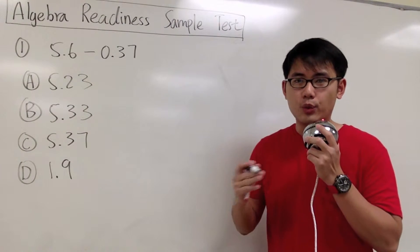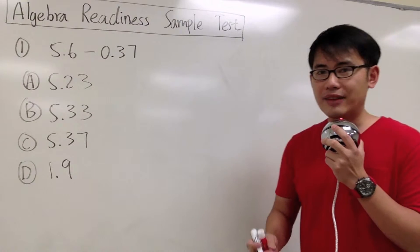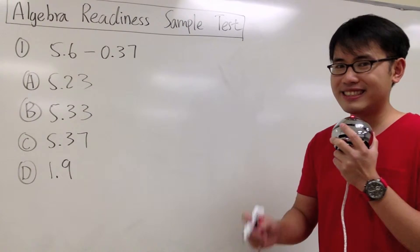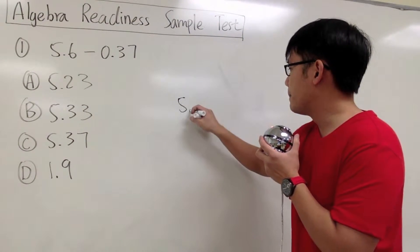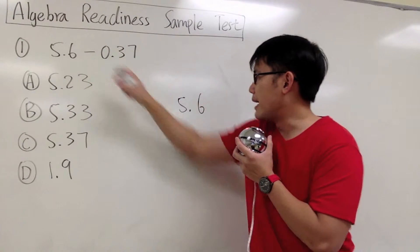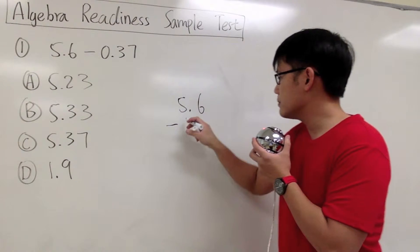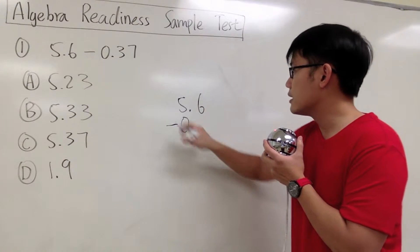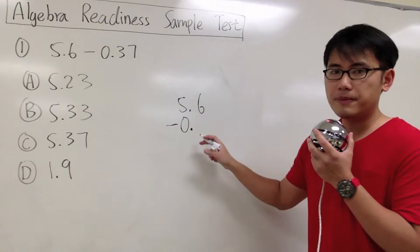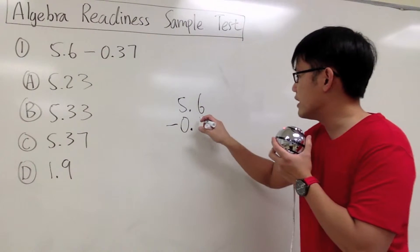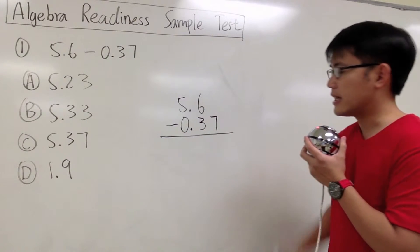When we subtract and when we add decimal numbers, we always have to line up with the decimal point first. So we will write this down as 5.6 and then minus 0.37. See how I line up with the decimal point right here? And then we'll continue with the 3.7 right here. This will be the setup.